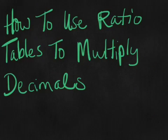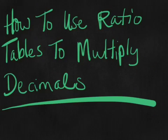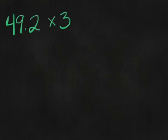Today's lesson is how to use ratio tables to multiply decimals. Let's take the problem 49.2 times 3. Now before we dive in, what do we need to do?